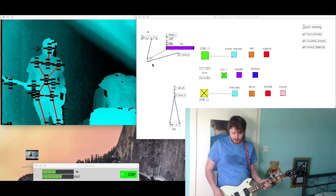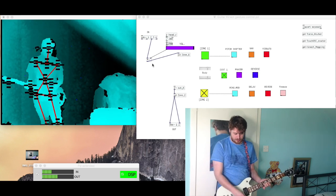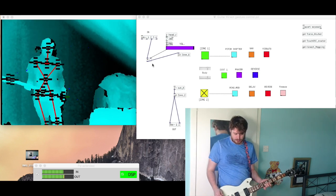On Touch OSC, we've got the first toggle which controls the distortion. Off. On.